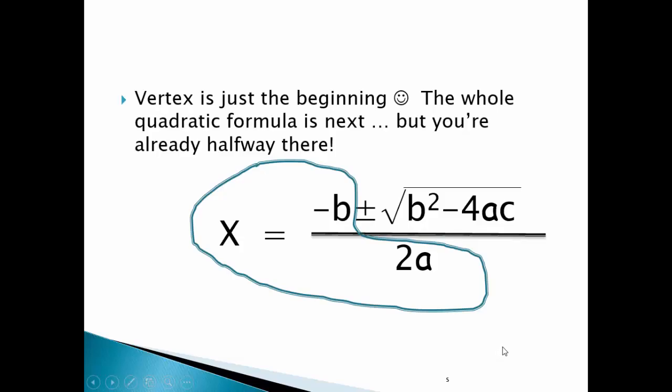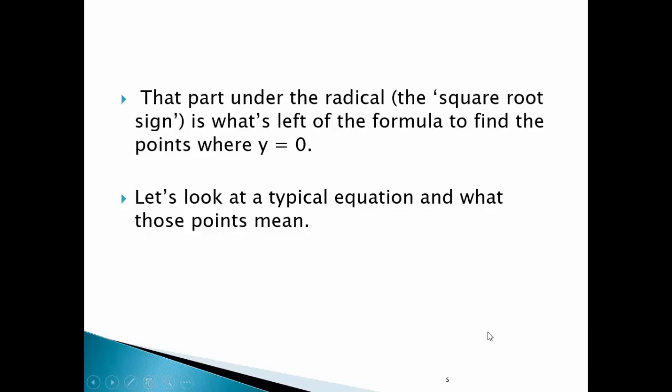The vertex is just the beginning. The whole quadratic formula is next, but you're already halfway there. That part under the radical, the square root sign, is what's left of the formula to find the points where y equals 0. Let's look at a typical equation and what those points mean.